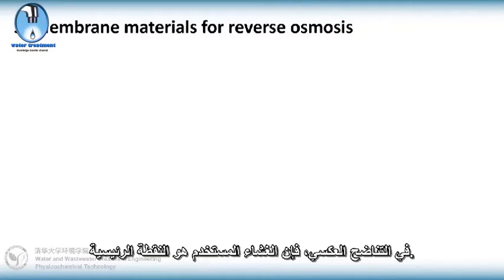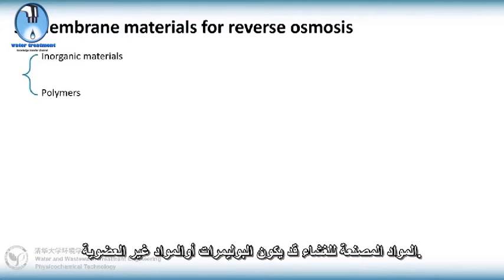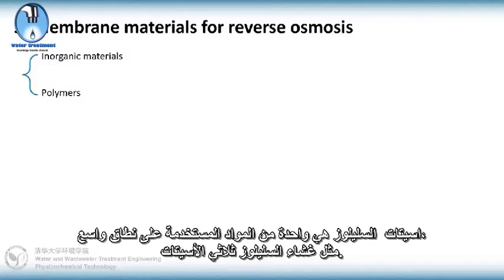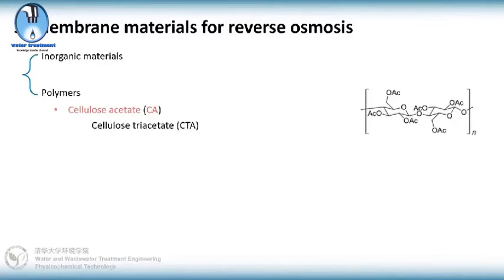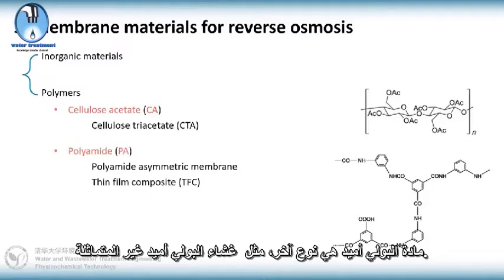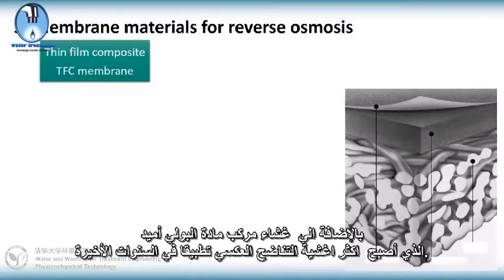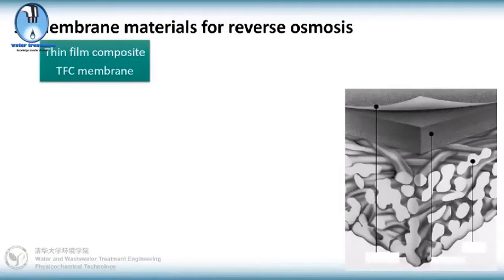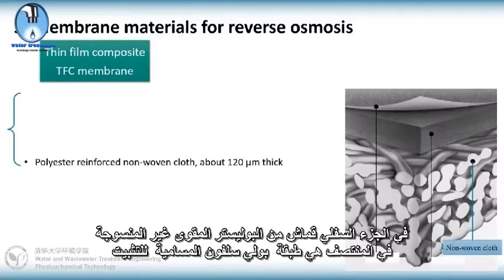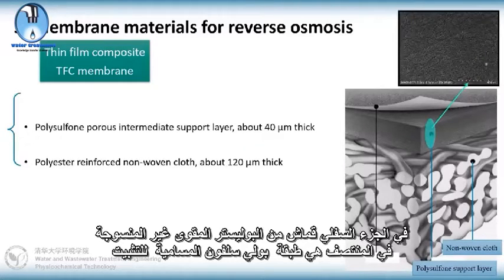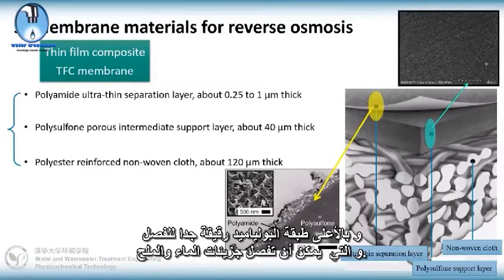In reverse osmosis, the membrane used is the key point. The membrane materials can be polymers or inorganic materials. Cellulose acetate is one of the widely used materials, such as cellulose triacetate membrane. Polyamide is another type, such as polyamide asymmetric membrane. Polyamide composite membrane has become the most widely applied reverse osmosis membrane in recent years. As shown in the pictures, it is structured by three layers: at the bottom is polyester reinforced nonwoven cloth, in the middle is a polysulfone porous support layer, and at the top is a polyamide ultra-thin separation layer, which separates water and salt molecules.